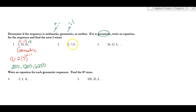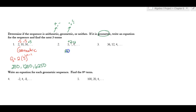Looking at the next sequence — there's nothing I can multiply to get from 5 to 7, but I can add 2, and I can add 2 again. Since this is adding, it's arithmetic, so we stop — we won't write the equation or find the other terms.